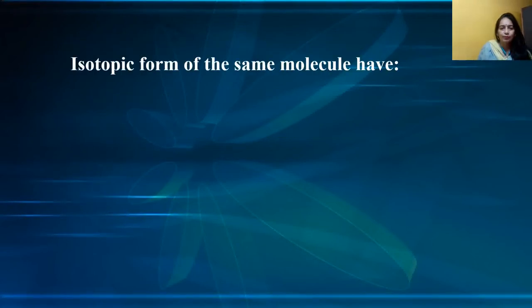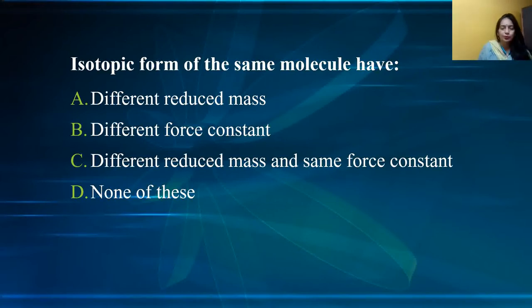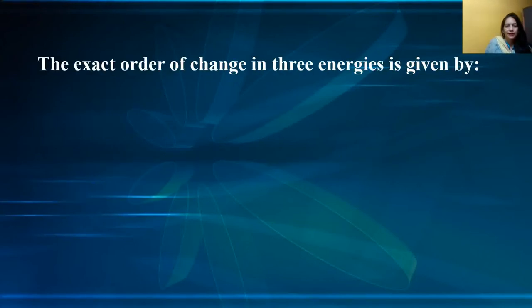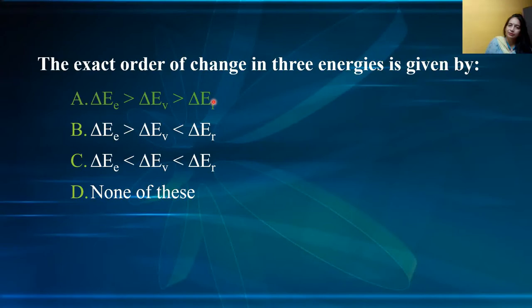Isotopic forms of the same molecule have — different reduced mass, different force constant, different reduced mass and same force constant, or none. The correct option is: isotopic forms have different reduced mass but the same force constant. Option A is the correct option.